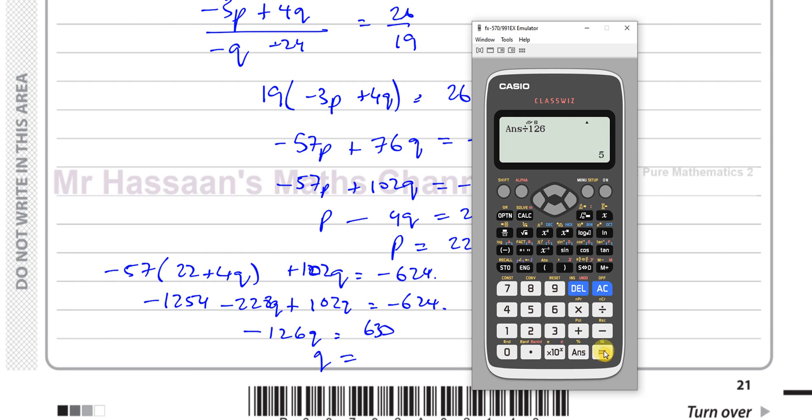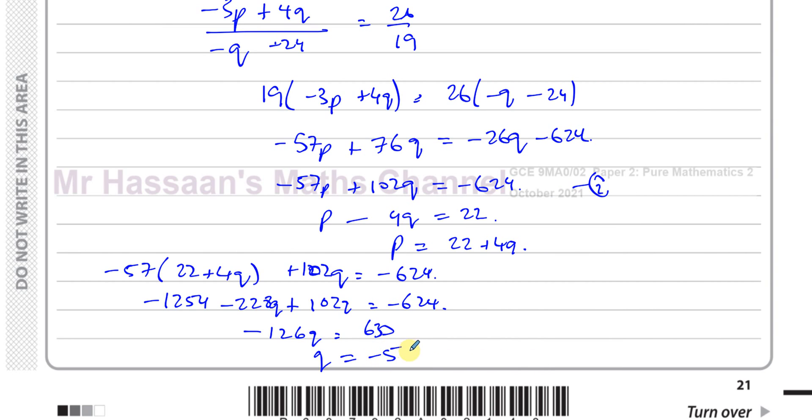So q is equal to 630 divided by -126. That gives us -5. So that's nice, q equals -5. So therefore we can say p is equal to 22 + 4 times -5. So p is equal to 22 - 20. So p is equal to 2. So we've got the values of p and q here.